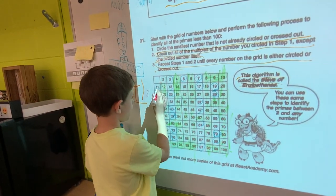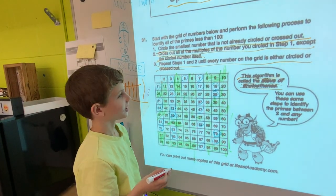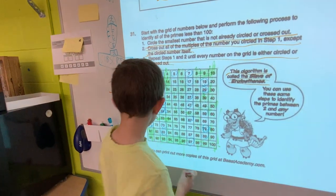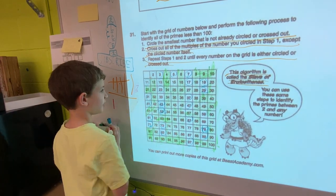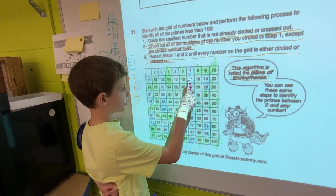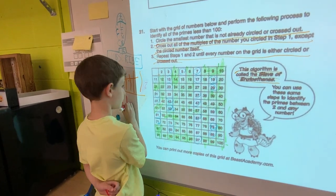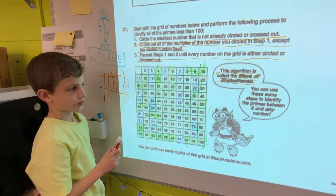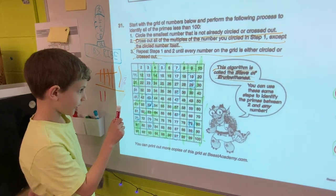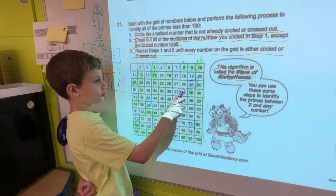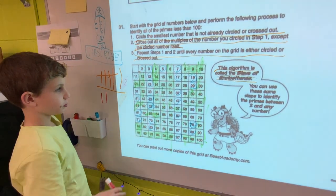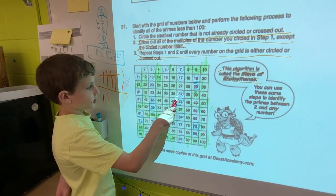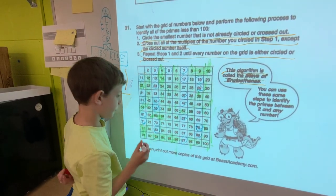So, eleven, the opposite is eleven. We don't really count that. Thirteen and thirty-one are, yes. Seventeen and seventy-one are. Nineteen and ninety-one. Twenty-three and thirty-two are not. Thirty-seven and seventy-three, yes.